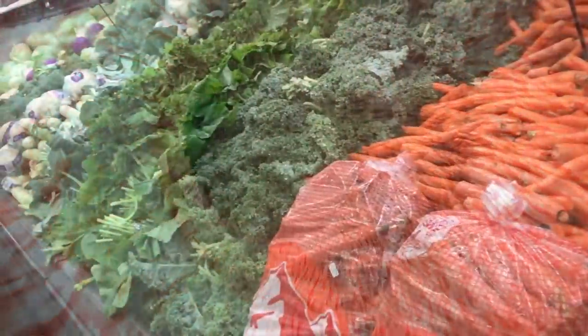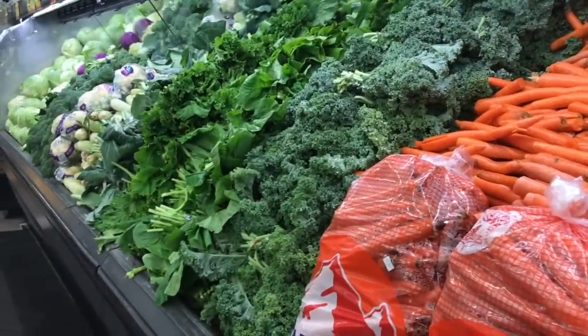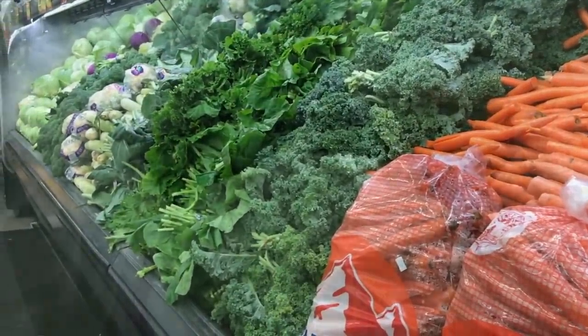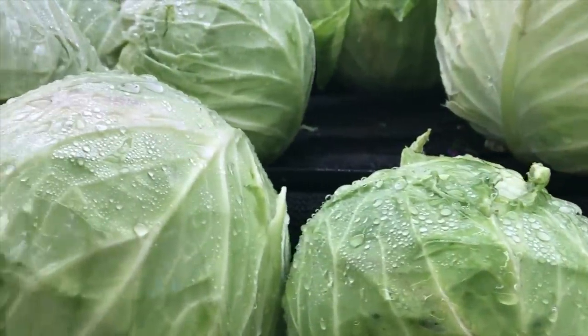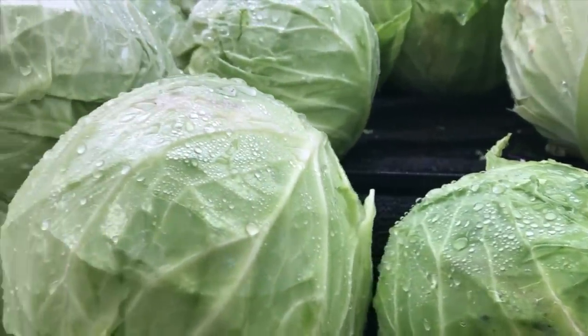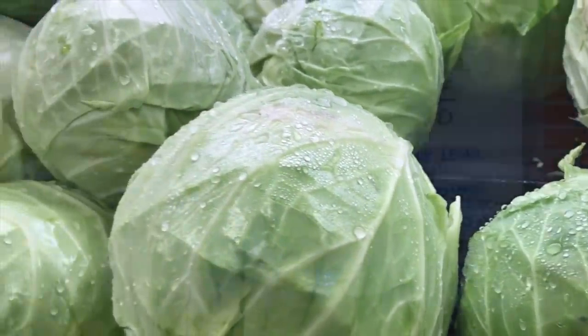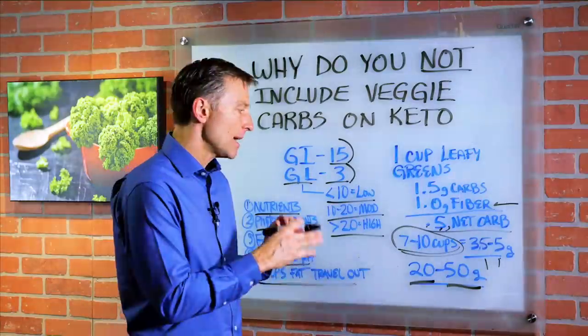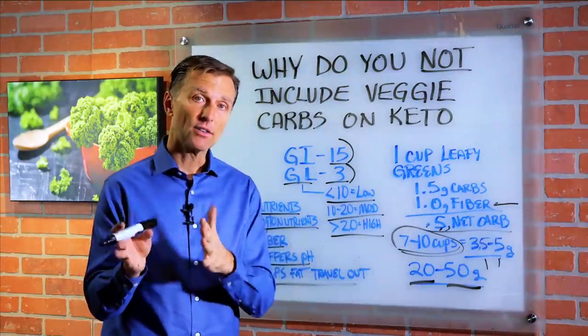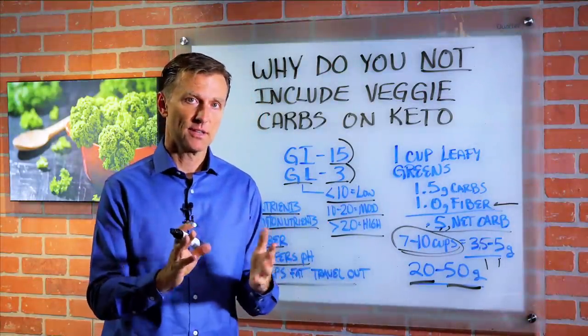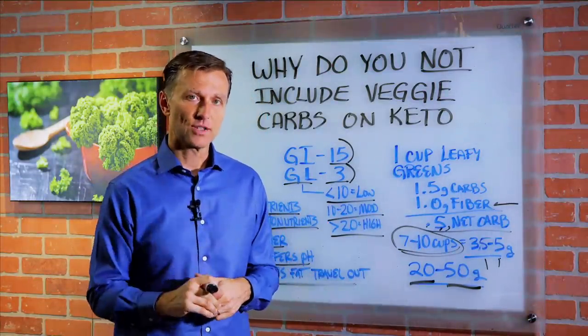So we don't want to put a restriction on vegetables just because they're a carbohydrate. Instead, we want to put a requirement that you need to do seven to ten cups of vegetables. That way, it can make keto healthy — thus, healthy ketosis. Thanks for watching.